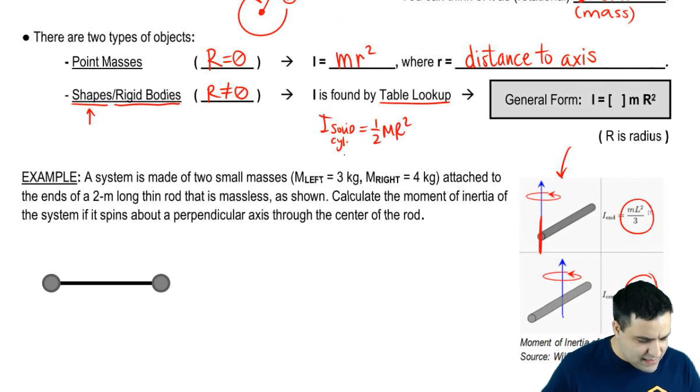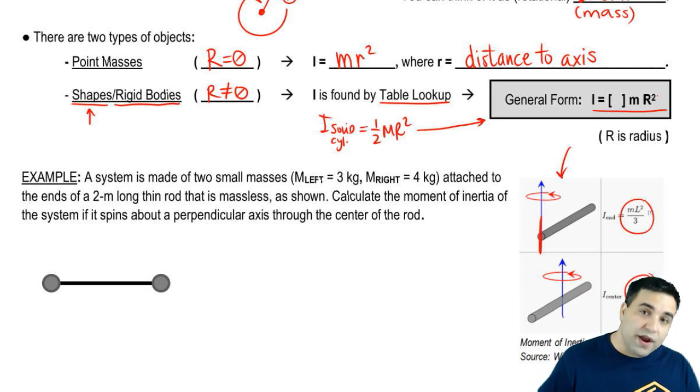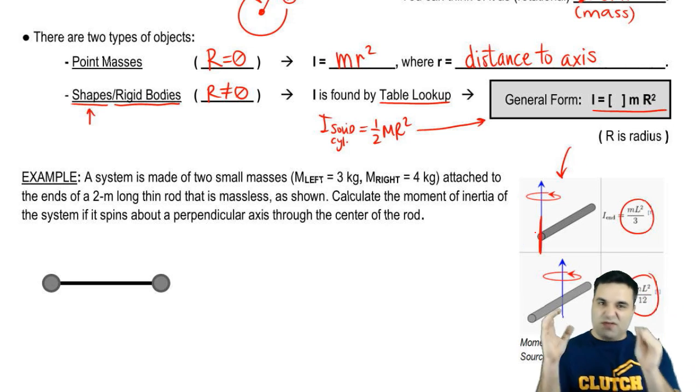One last point here is that most moments of inertia will follow this general form. It will be some fraction, like half or two-thirds or two-fifths or whatever, mr squared. In this case, this is a thin rod. So what matters in the rod is not the r, not the radius of the rod, because it's very thin. So it's small. It's negligible.